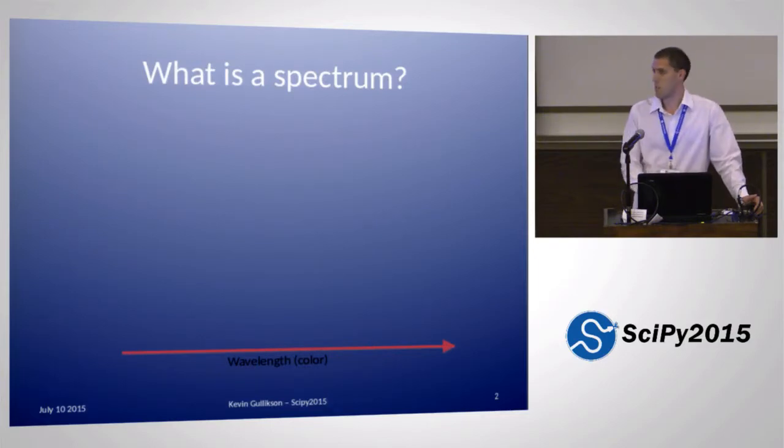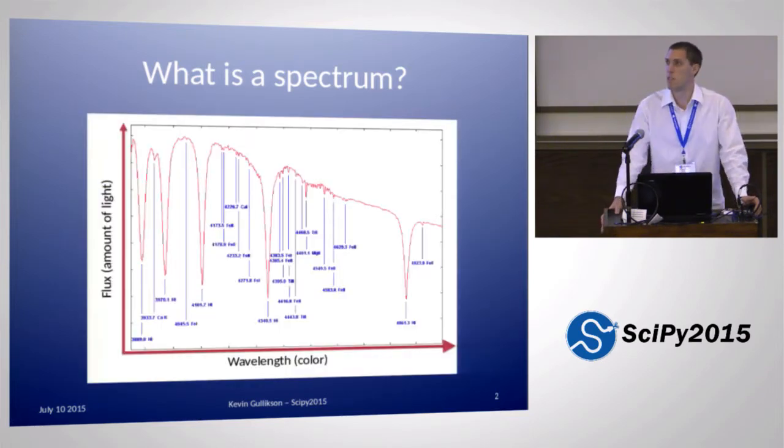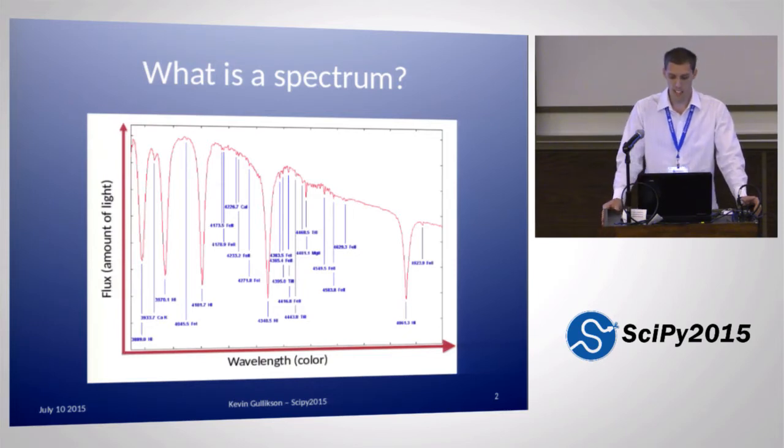The x-axis is wavelength or frequency or color in some way. The y-axis is just how much light you have at that color. The spectrum looks something like this, where you have kind of a general shape. And then all these dips are absorption lines caused by various atoms or molecules. In this case, it's the spectrum of the star Vega, and the dominant lines you see there are coming from hydrogen and the smaller ones are coming from various metals.